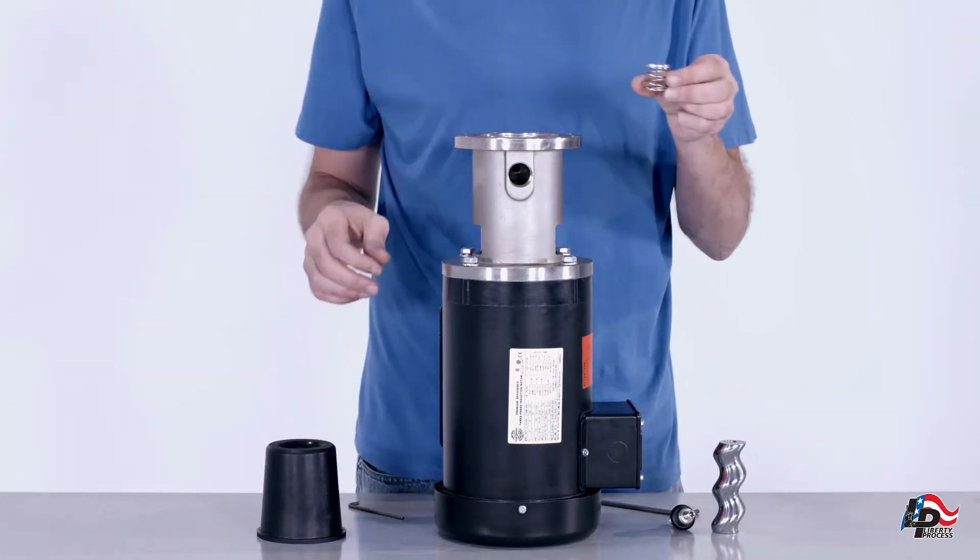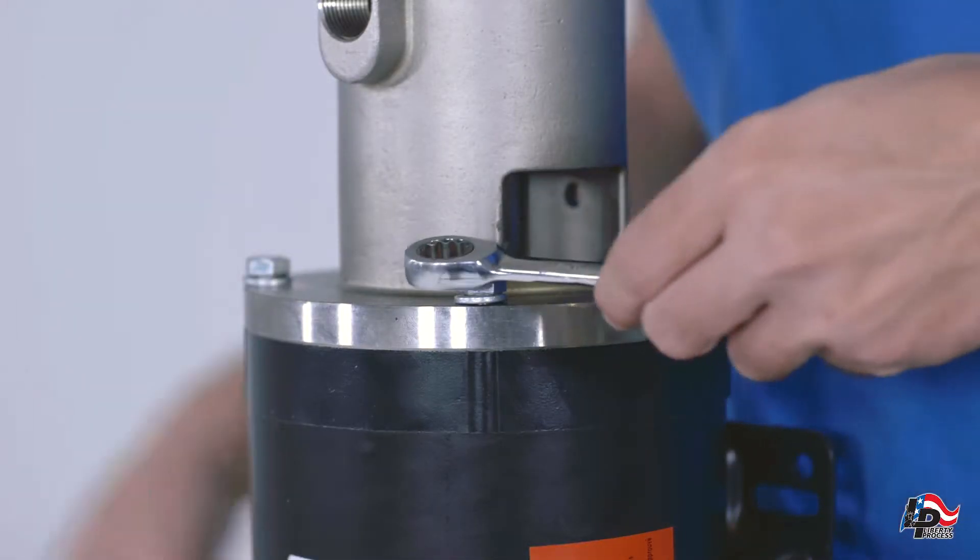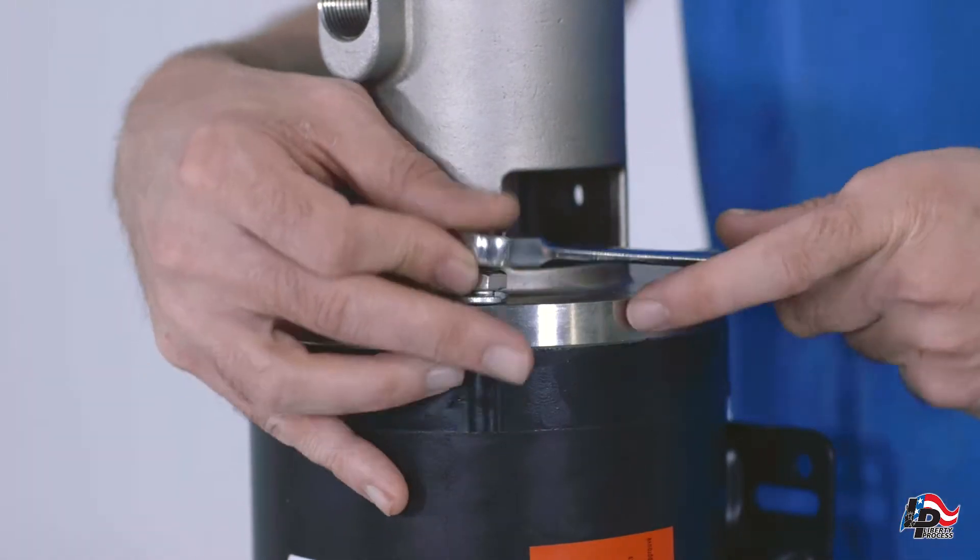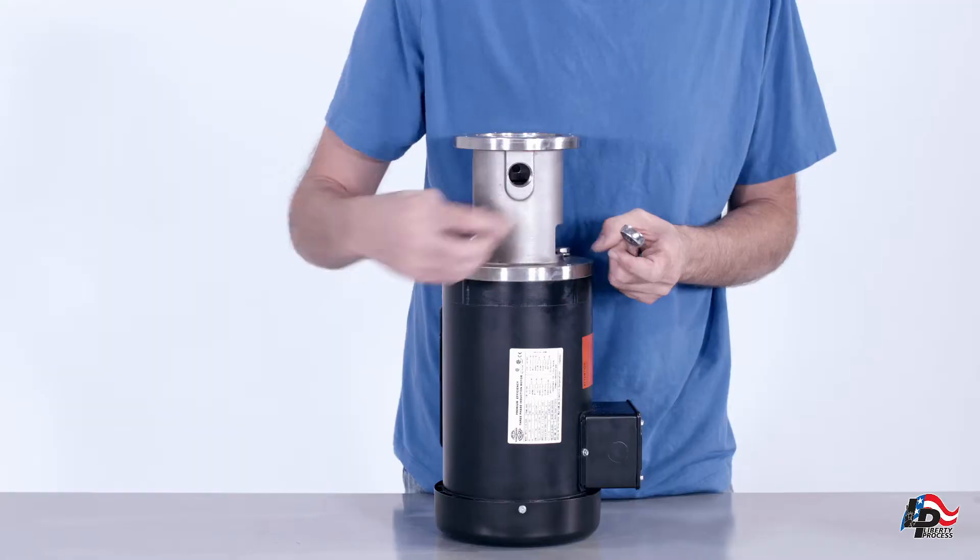Remove the spring from the discharge casing. Using the 9/16 inch Allen wrench, unscrew the 4 bolts on the pump discharge casing from the motor mounting flange and lift the discharge casing off the motor.